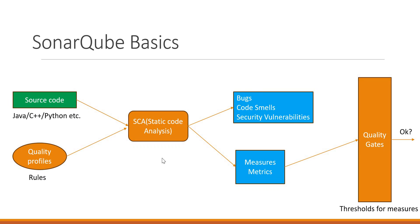Now we understand the basic features of static code analysis in SonarQube, including quality profiles, quality gates, issues, measures, and metrics. Let us now look at the architecture.